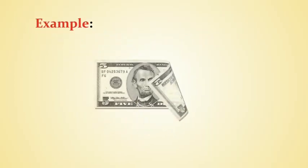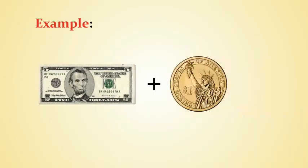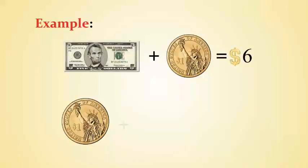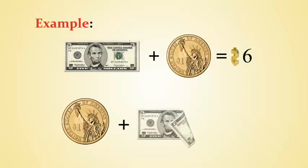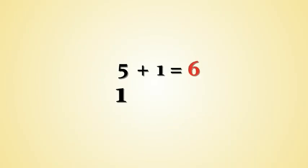This is a $5 note. If we add a $1 coin to it, we will get the value of $6. Likewise, if we take a coin of $1 and add a note of $5 to it, again we get the value of $6. We can write it as 5 plus 1 equals 6, or 1 plus 5 equals 6. In both cases we get the same answer.